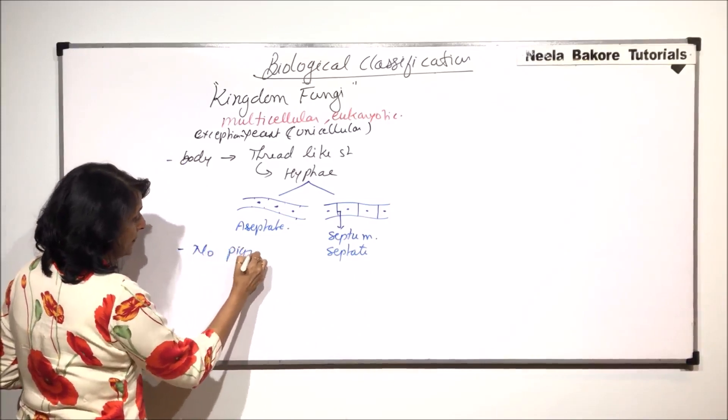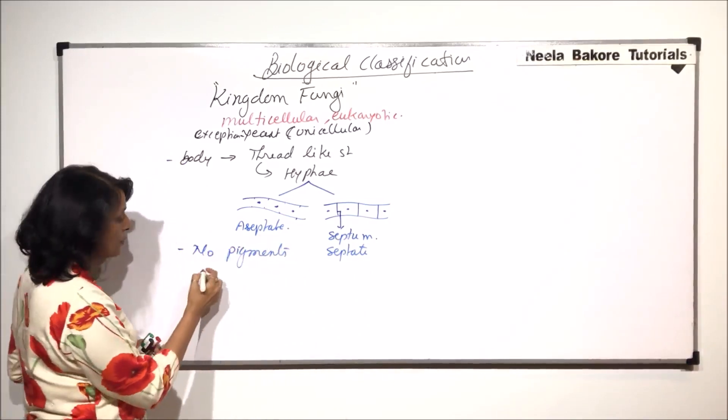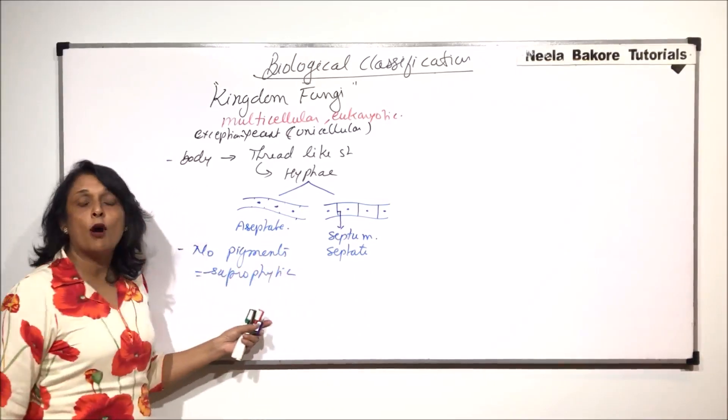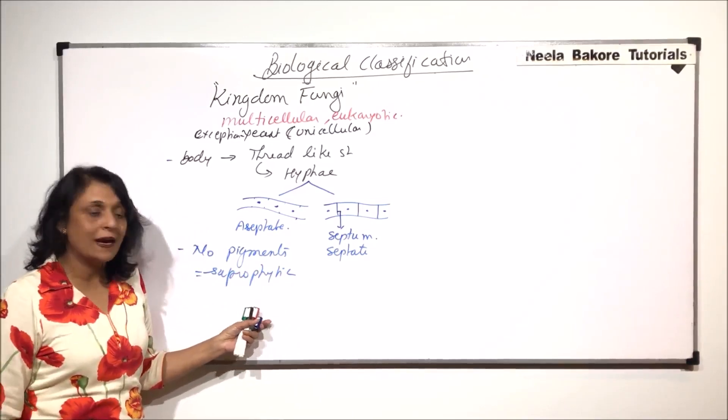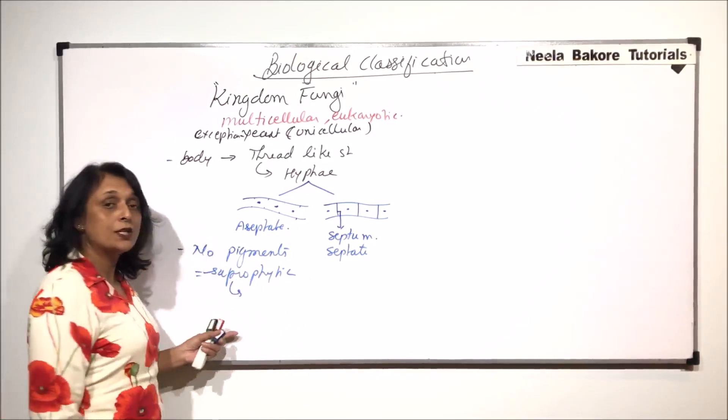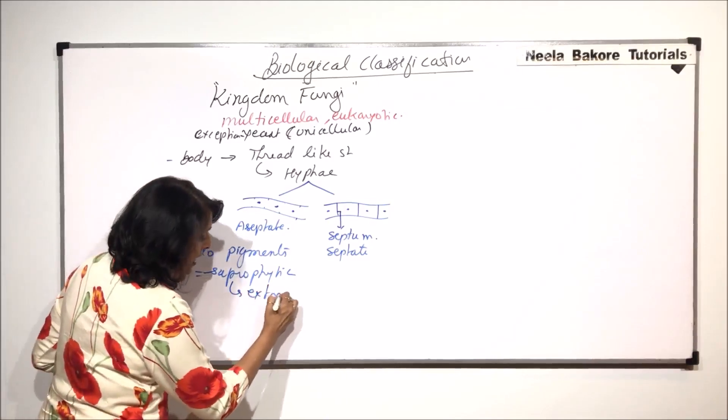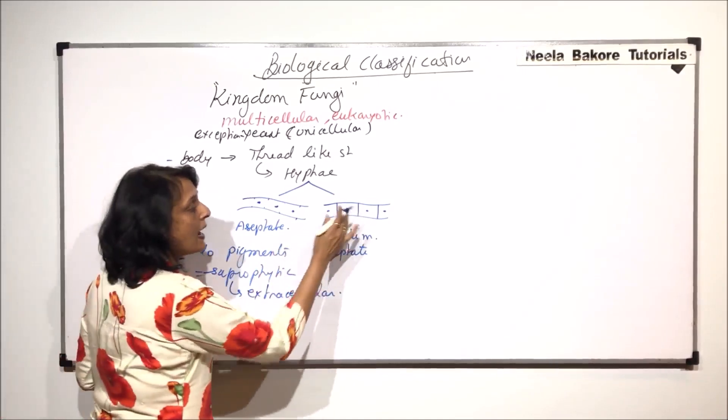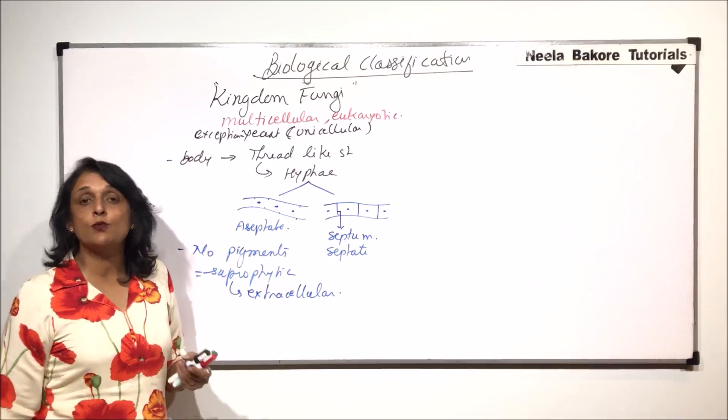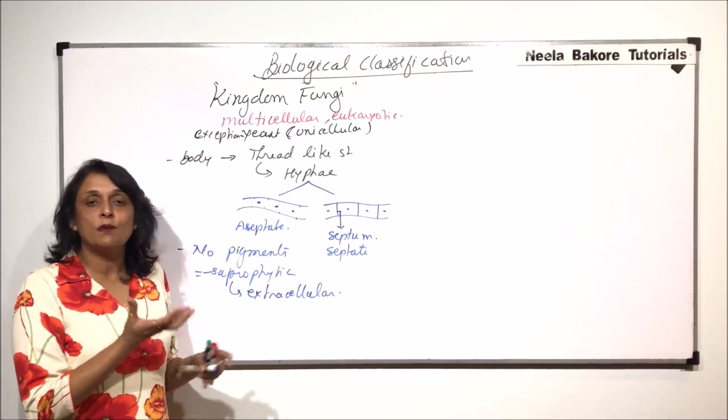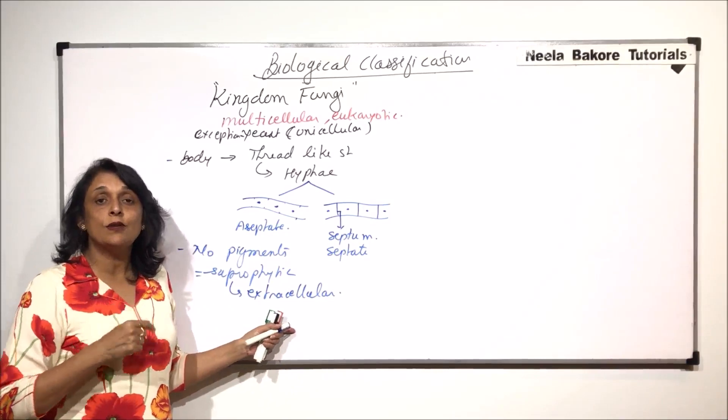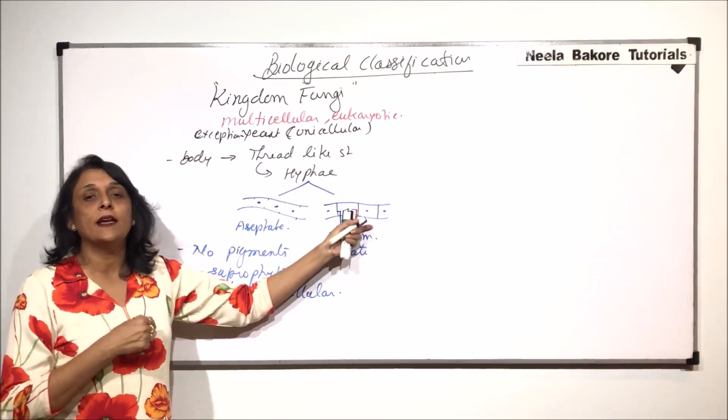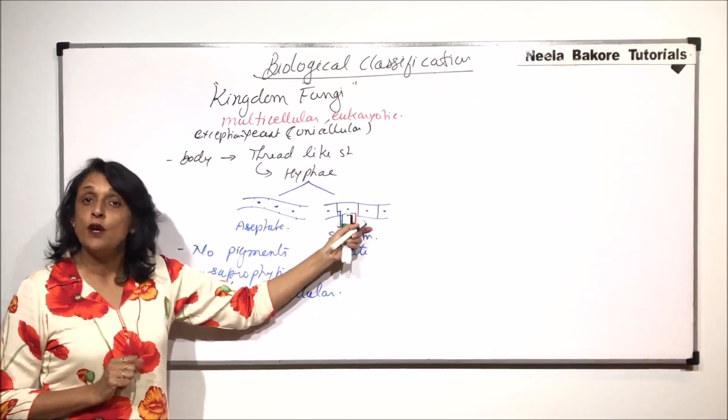No pigments for photosynthesis, and that's why they are saprophytic. That means they obtain their nourishment from dead and decaying matter and the digestion which takes place is extracellular. What happens in extracellular digestion is that from these hyphae, digestive juices, the enzymes will be secreted on that dead and decomposing matter. Digestion is going to take place outside the cell and the digested food is getting absorbed. So this is called the saprophytic mode of nutrition.